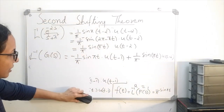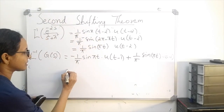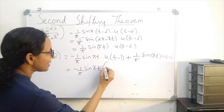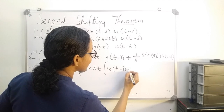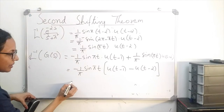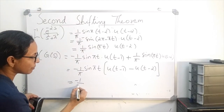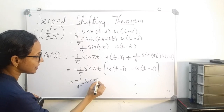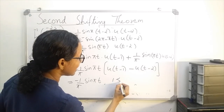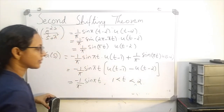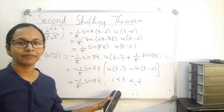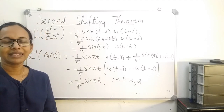Taking the common factor, we can write this as minus 1 over pi times sin pi t times the quantity u of t minus 1 minus u of t minus 2. This expression equals minus 1 over pi times sin pi t, defined in the interval 1 less than t less than 2. So the inverse of the function is minus 1 over pi times sin pi t for 1 < t < 2.